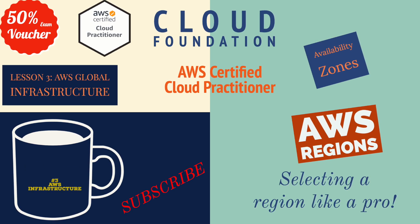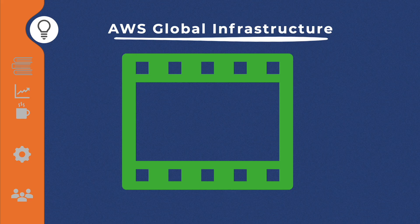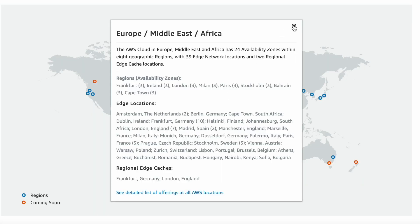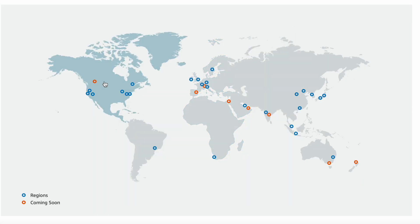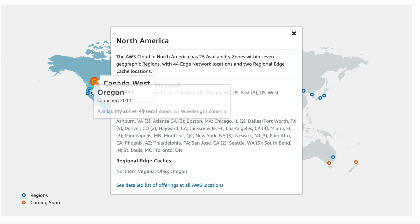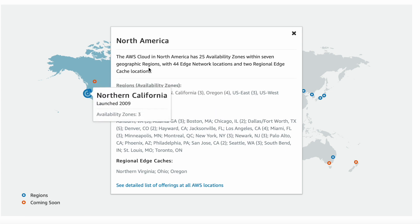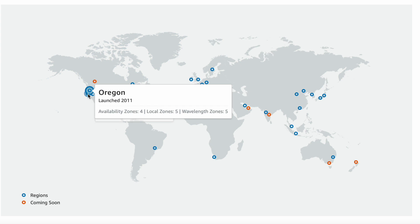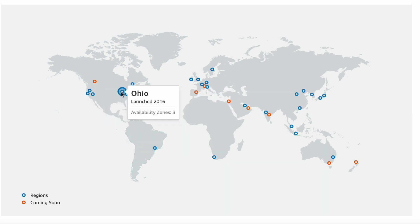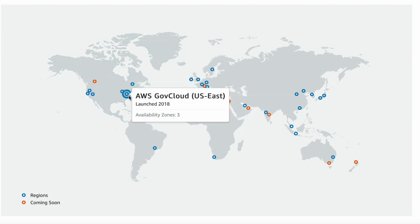To understand the global infrastructure of AWS, let us look at the AWS global infrastructure map. As you can see, you can select and choose a circle on the map to view summary information about the region represented by that circle. You can also view the regions and the availability zones.